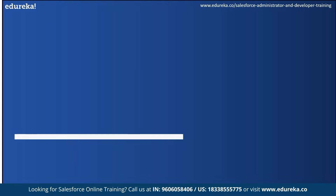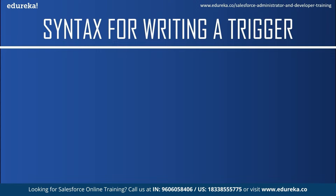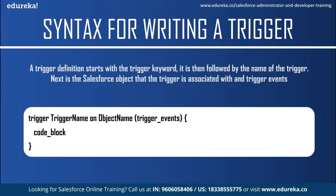Now let me explain the syntax for a Salesforce trigger. The syntax of a trigger definition is quite different from a class definition. A trigger definition starts with the trigger keyword, followed by the name of the trigger. Next is the Salesforce object the trigger is associated with — this could be leads, contacts, accounts, or any custom objects, known as S objects. Next is the trigger event, and you can fire a trigger on one or more events separated by commas. Finally, the body of the code contains the condition under which it fires.